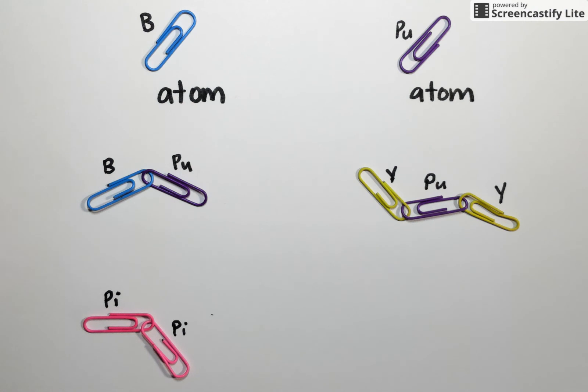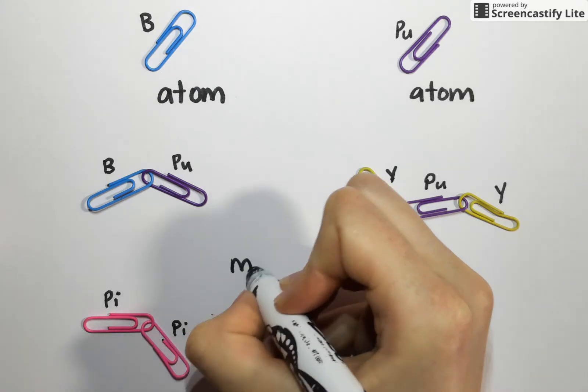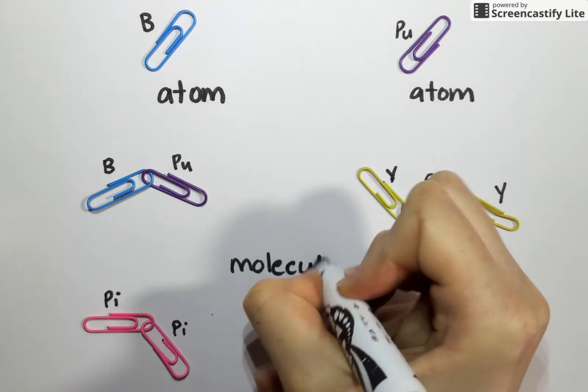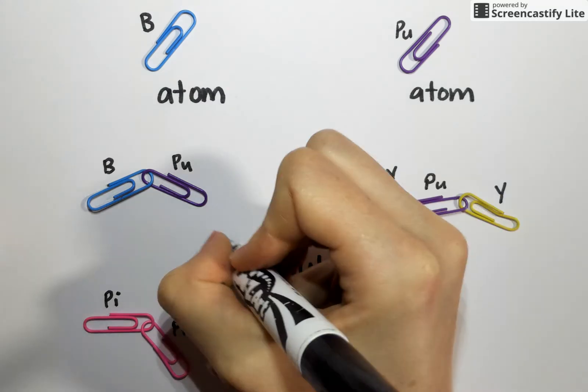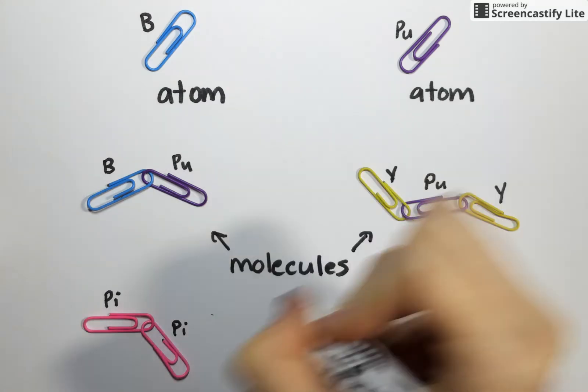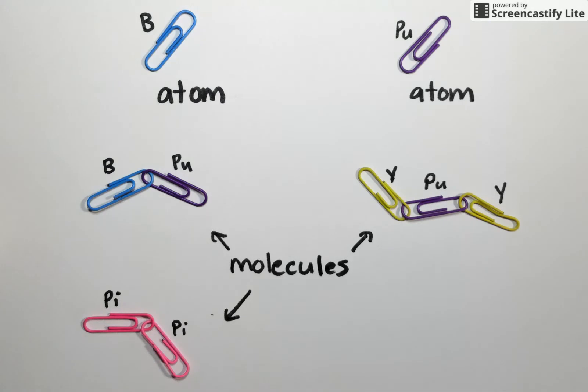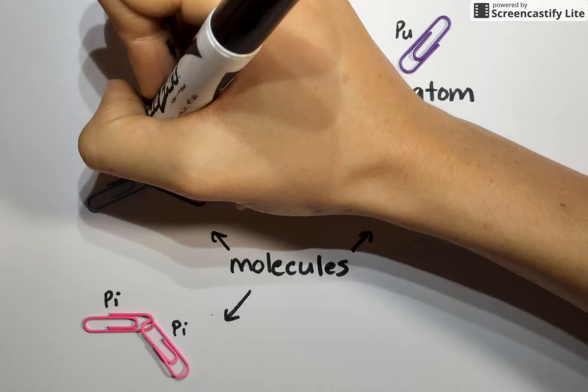As soon as we start linking those atoms together though, you can see we start to form more complex structures. These structures have a name as well. We call them molecules. Molecules are just atoms that have been linked together and those linkages in chemistry we call a chemical bond.